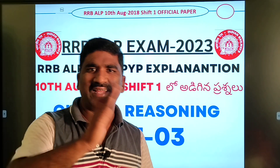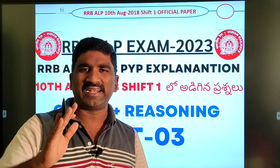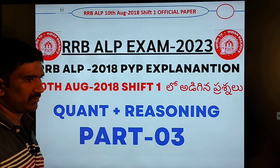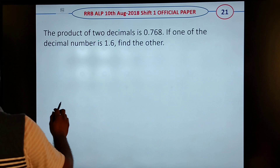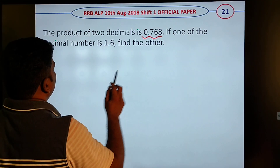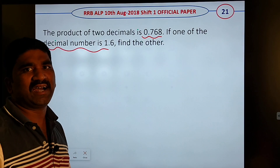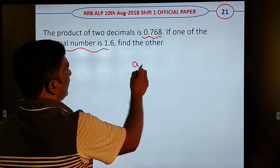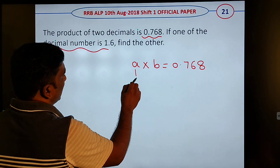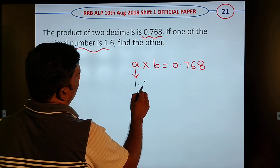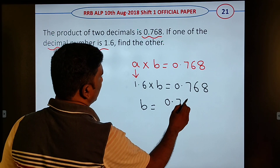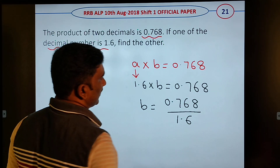Check the channel every day and check the next video. So we will check the first question. The product of two decimals — the multiplication is equal to 0.768.